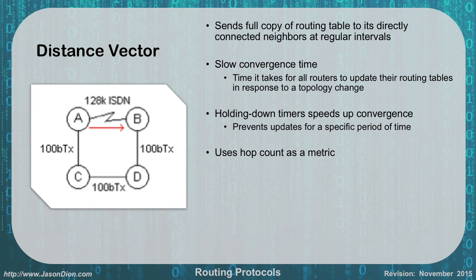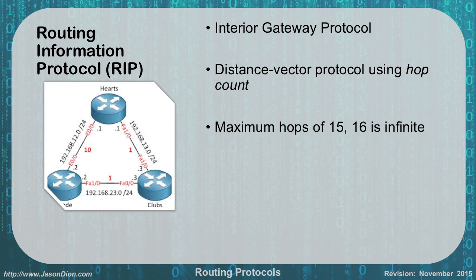Distance vector uses hop count as the metric. The most popular distance vector protocol is RIP — Routing Information Protocol. It is an interior gateway protocol that uses hop count. The maximum hop count is 15; 16 is considered infinite. So for poison reverse, if you're using RIP, 16 is the value. If I told John he has to go through 16 stops to get to my house, he'd give up. If I told him 15, he'd say he can get there eventually. And if there's a better way with only three stops, he'd take that first — and that's what RIP does.